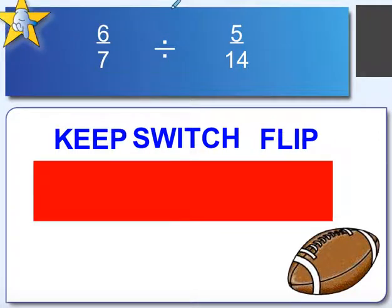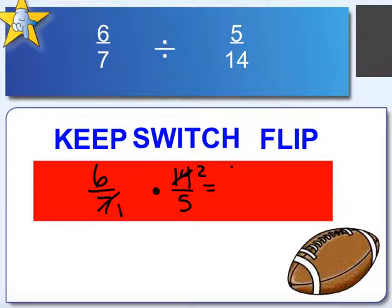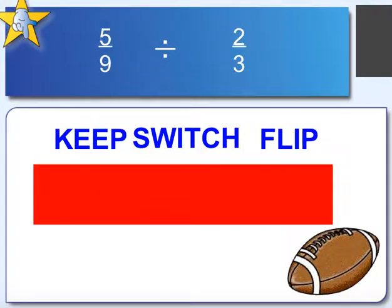Another one: 6 sevenths divided by 5 fourteenths. We keep 6 sevenths, switch the sign to multiplication, and flip to get 14 over 5. We can simplify the 7 and 14, and multiply to get 12 over 5. You can reduce it or put it in a mixed fraction — that's the same as 2 and 2 fifths.